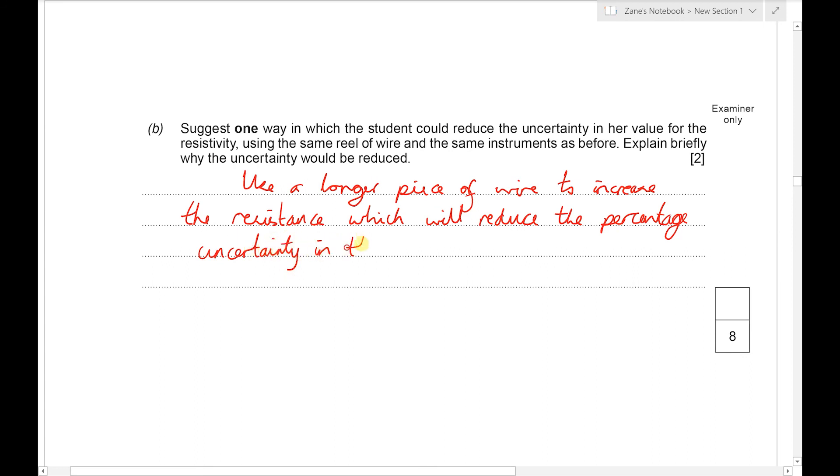So when we're trying to improve an experiment, always attack, first of all, the thing with the largest percentage uncertainty, which in this case was the resistance. Thank you very much for listening. Please remember to like and subscribe and feel free to leave any comments. Goodbye.